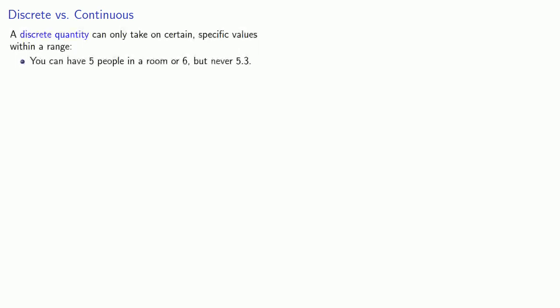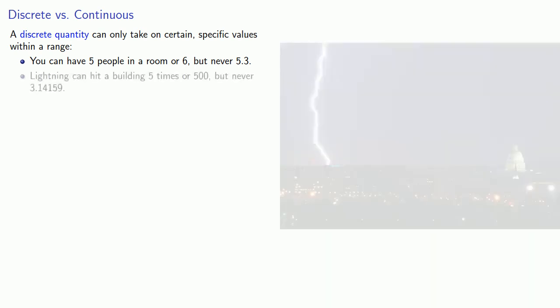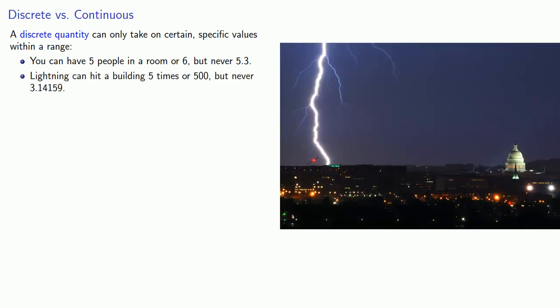A discrete quantity can only take on certain specific values within a range. You can have 5 people in a room, or 6, but never 5.3. Or lightning can hit a building 5 times or 500, but never 3.14159.